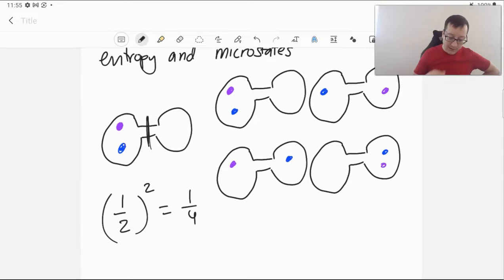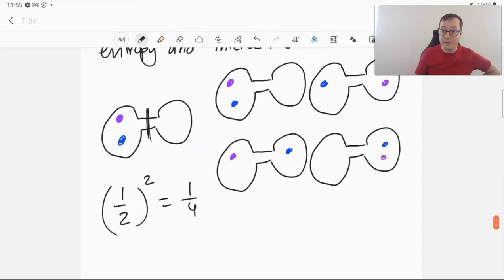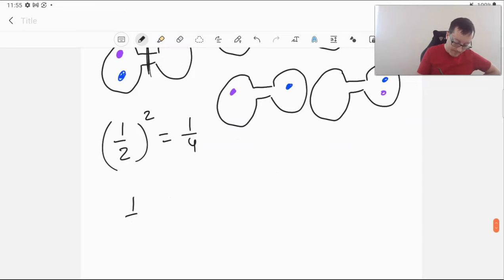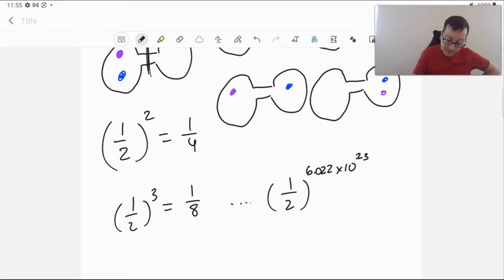If we have three molecules and we want them to all be on the same side, that would be one-eighth. And if we have a mole of gas, it's about zero then. One-half raised to the 10 to the 23rd power. Extremely small number.